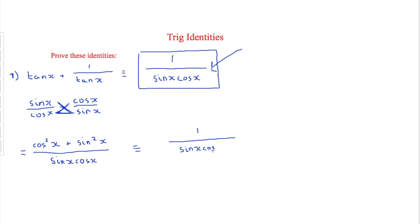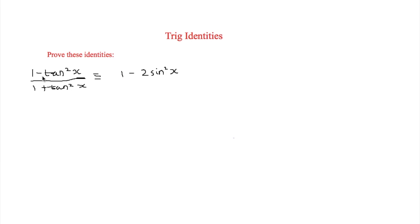The final question to answer is: one minus tan squared x over one plus tan squared x, and that has to be equal to one minus two sine squared x. This is slightly harder but we can still use the same identities. We know that tan x equals sin x over cos x, which means that tan squared x is simply equal to sin squared x over cos squared x.